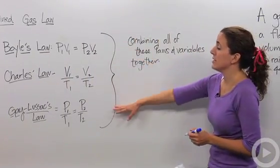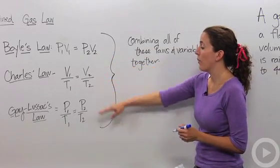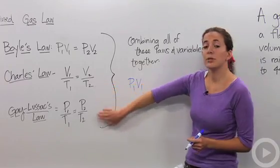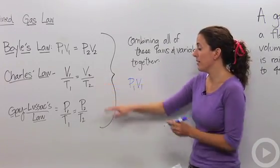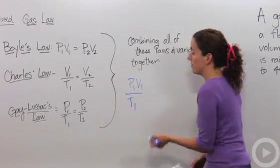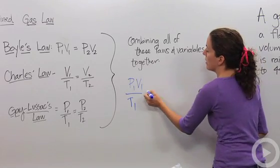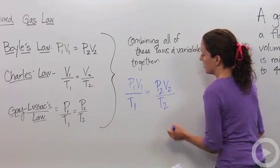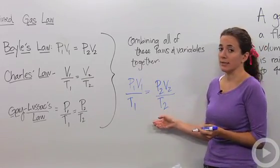Okay, if you notice in these three gas laws, the pressure and volume are always on the numerator. So we're going to keep them on the numerator, P1, V1. And notice that temperature is in the denominator over T1. So all these things are just squished into one. And then P2, V2 over T2. Okay, so this is what we're going to call the combined gas law.